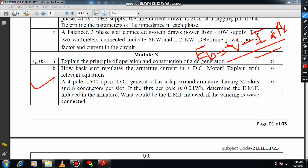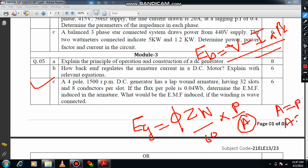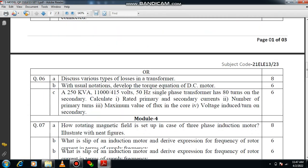Here you have to use the equation. Generated EMF: EG equals phi Z N by 60 times P by A. While selecting the number of conductor parallel path A, for lap winding A equals P, for wave winding A equals 2. That point you have to take into consideration.